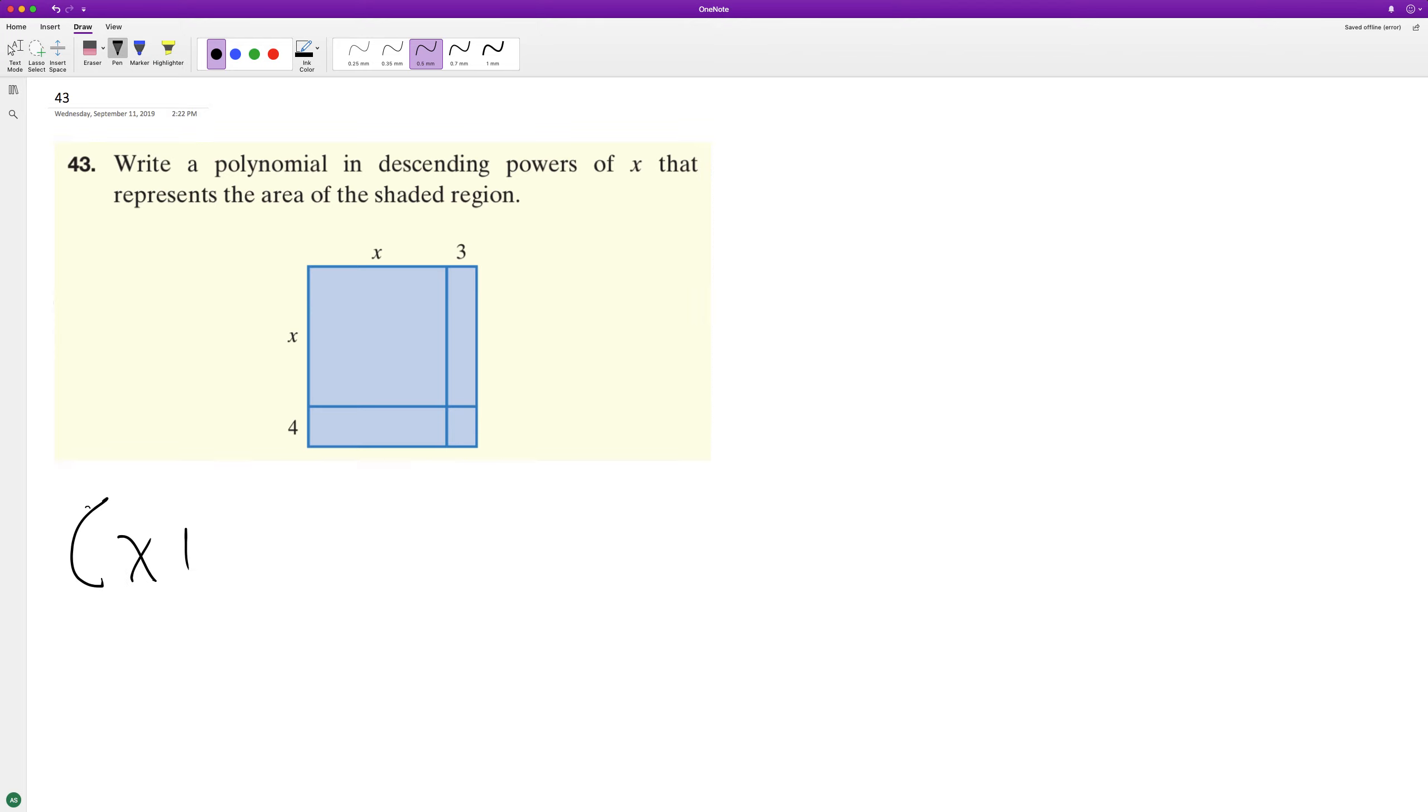portion is x plus 3 and the vertical portion is x plus 4. They want it in descending order, so we'll go ahead and